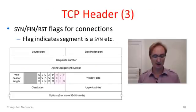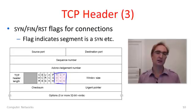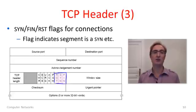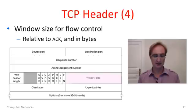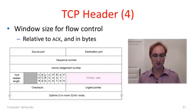What else is in the header? There are some flags used to set up connections — these are the SYN and FIN flags. There's also a reset to abort. These are simply flags because these messages also reuse the sequence numbers and acknowledgement numbers. For instance, to set up a connection with a SYN, the sequence number is used as a parameter instead of having to carry it elsewhere in the packet. There's also a window size used for flow control. Like sequence and ACK, this is measured in bytes rather than segments, and represents the number of bytes of buffer space remaining relative to the value of the ACK.